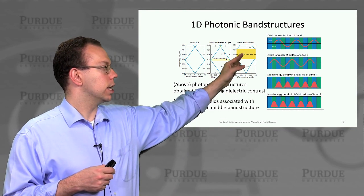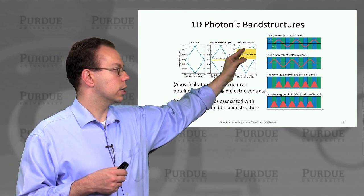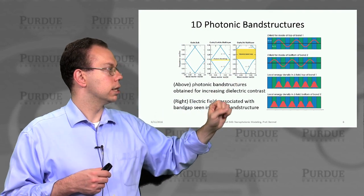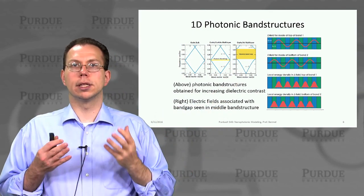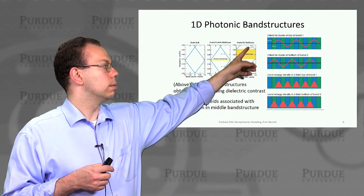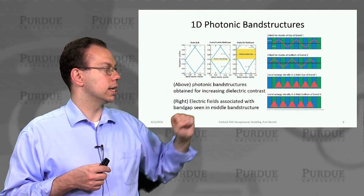But if you alternate between dielectric constants of, say, 13 and 1, you actually start to see a much bigger band gap, and that's the yellow region.